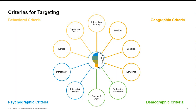For that, there are some criteria, typically grouped into four main categories. There are behavioral criteria — number of visits, device used, the customer journey. Geographic criteria like weather, location, time of day, or season. Demographic criteria, quite similar to master data: gender, age, profession, income. And psychographic criteria — about personality, interest, and lifestyle. Personality and interest and lifestyle are often connected. These last two — interest and lifestyle — are the focus of this webcast.